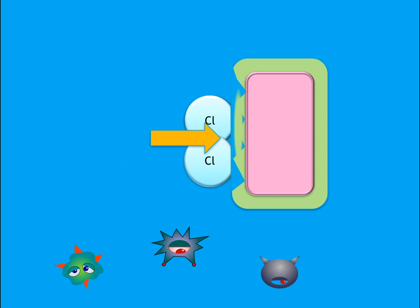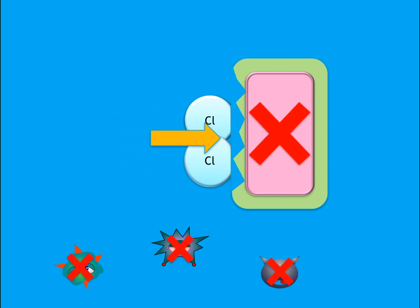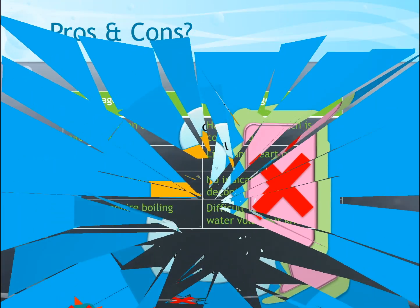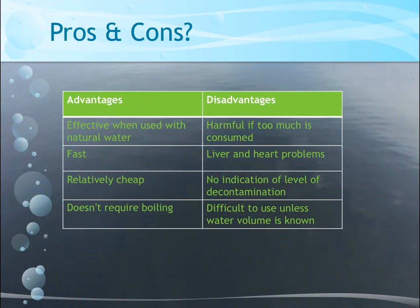This means that chlorine will successfully kill all of the pathogens most commonly found in natural water. The major benefits to this method of disinfection are that it is quick, cheap and very effective in removing biological contamination. However, a major downside to this method is that using an incorrect ratio of chlorine to water can have serious health effects on the consumer.